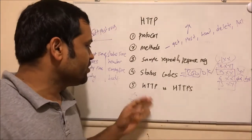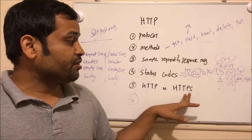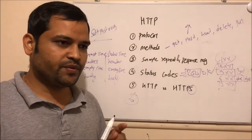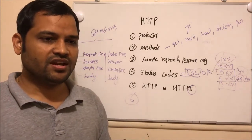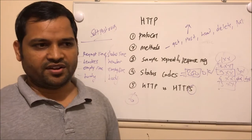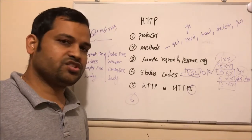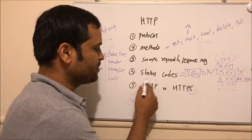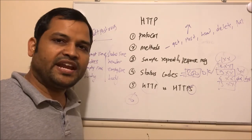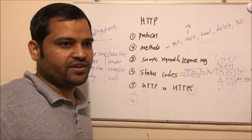Now let us take a look at what is the difference between HTTP and HTTPS. The main difference is that HTTPS is a secure protocol — all the information exchanged between the browser and the server is encrypted. If someone tries to intercept the packets sent between the client and server, they will not be able to read them because it is encrypted. But in HTTP, all the data transmitted between the client and server is in plain text, so a hacker can easily read those packets without any issues.